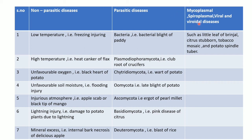Coming to mycoplasmal, spiroplasmal, and viral diseases: in brinjal we can observe the little leaf of brinjal, which is caused by mycoplasma. Citrus stubborn, tobacco mosaic, and potato spindle tuber are examples of mycoplasmal, spiroplasmal, and viral diseases.